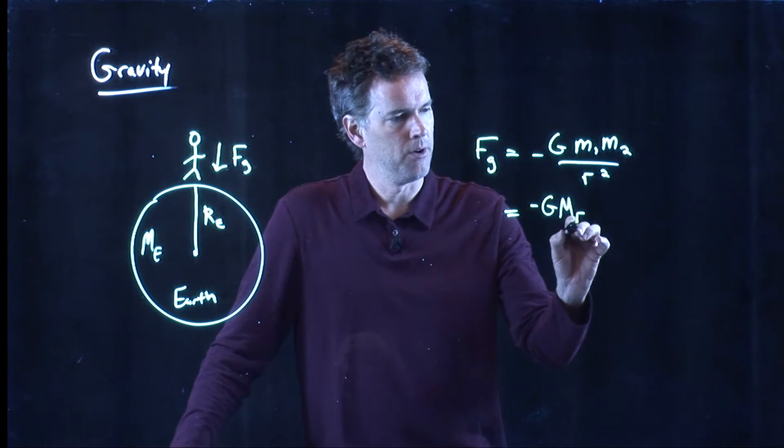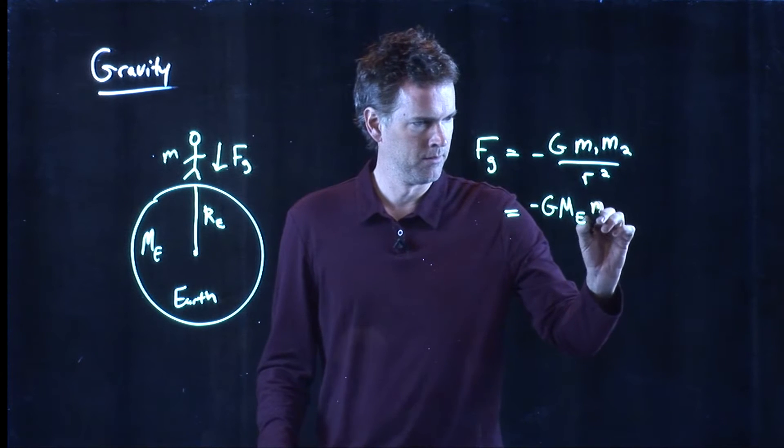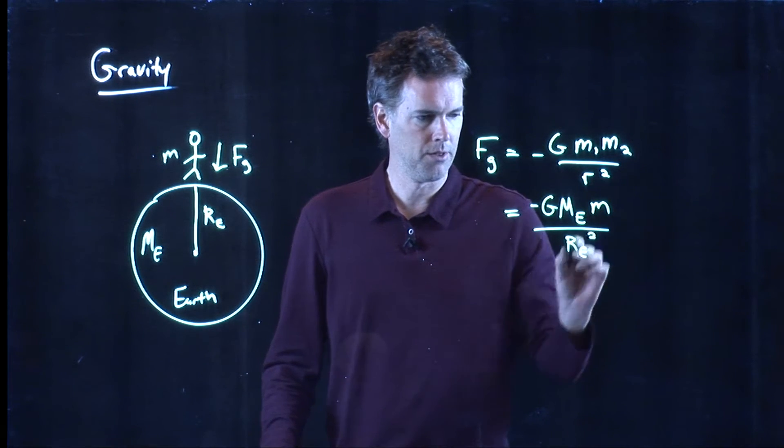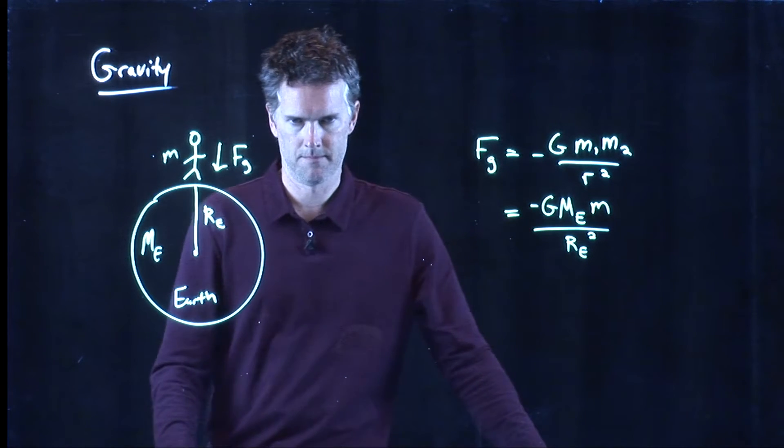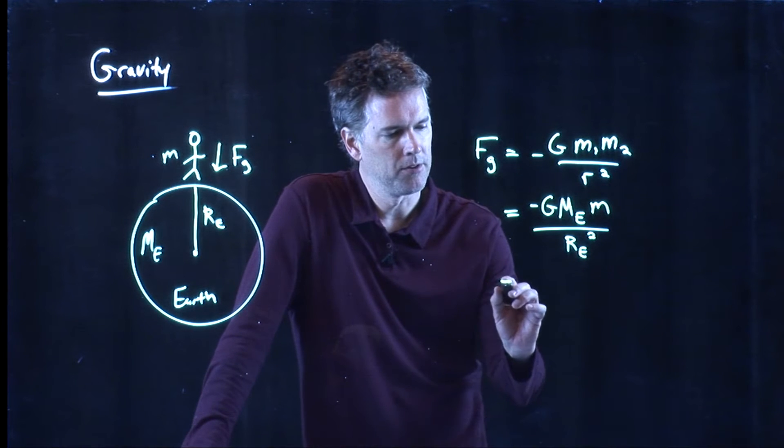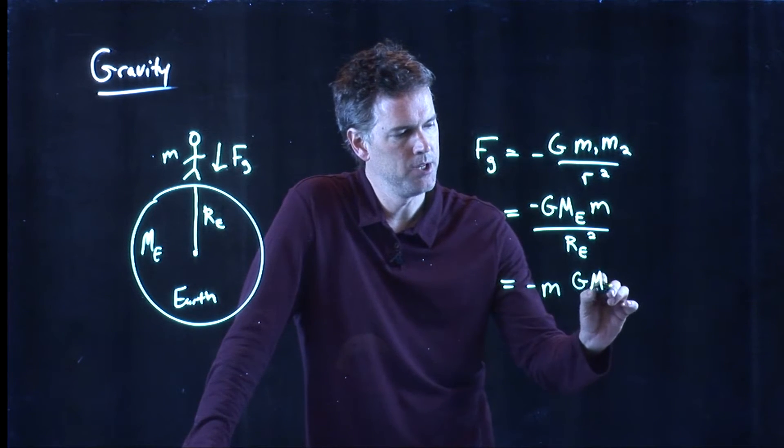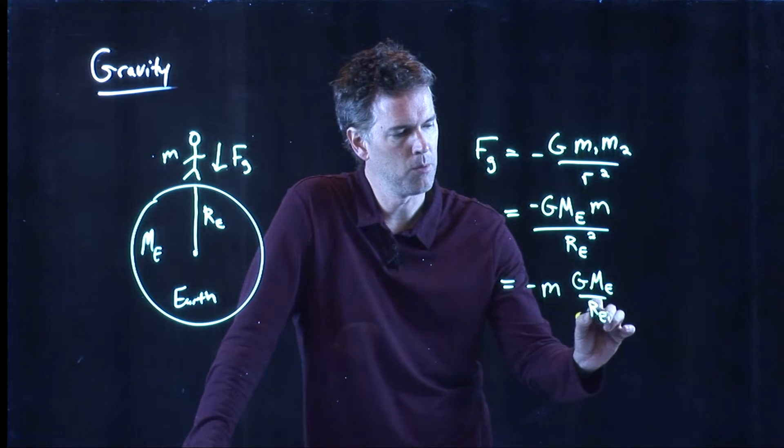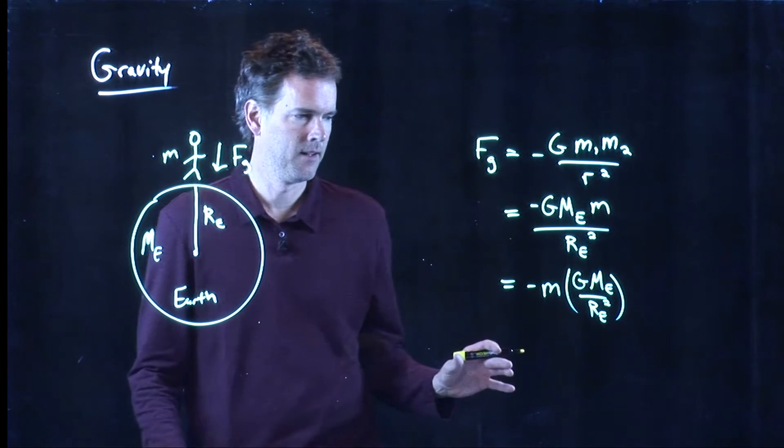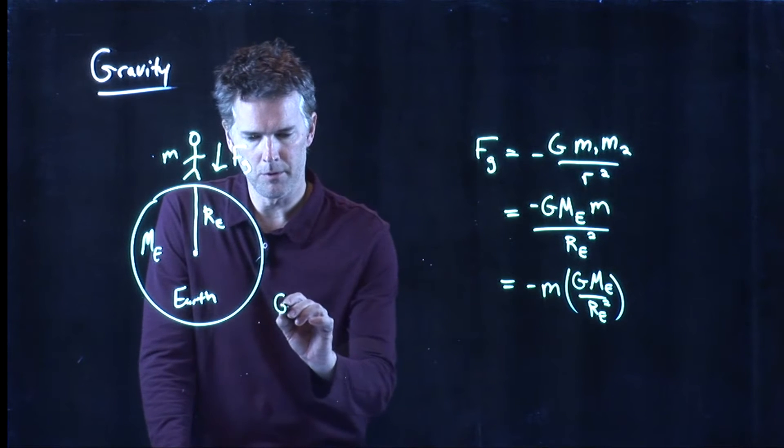Mass of the Earth there, the mass of us right there, the radius of the Earth squared right there. Let's rewrite this slightly and put G M_E over R_E squared—put all that stuff second. And now let's punch in some of these numbers. So what do we have for these numbers?